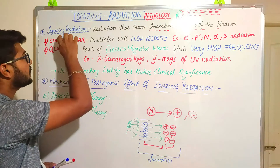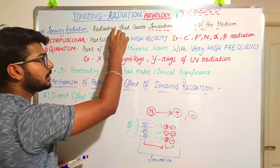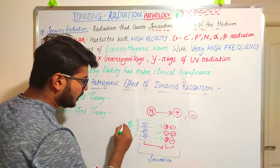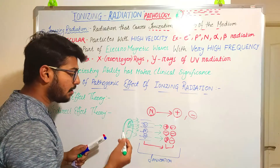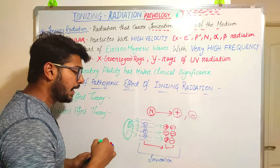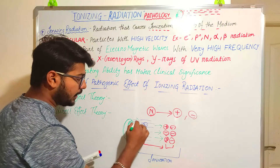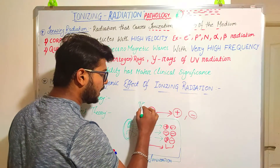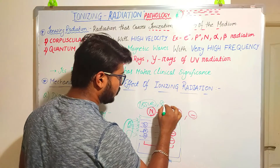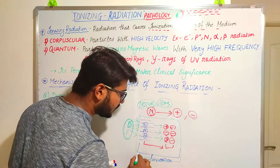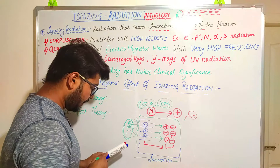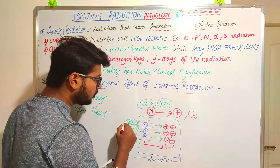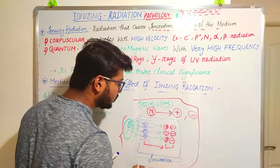Ionizing radiation means the radiation that causes ionization of the medium. This source is nothing but day-to-day life roentgenography — for example, X-rays that we use for determining any kind of fracture located in our tissue or bone. This medium can be considered a tissue or bone, and we are going to read how this source causes the pathological condition.